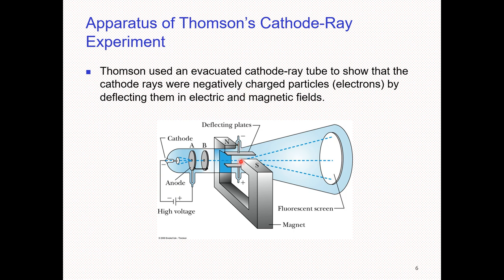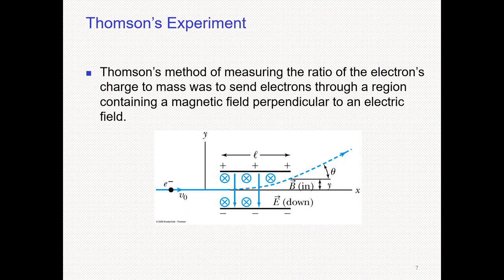The result confirmed that the negative charge is deflected toward the positive plate. This is the electron. The next step in Thomson's experiment was designed to find the charge-to-mass ratio of the electron.